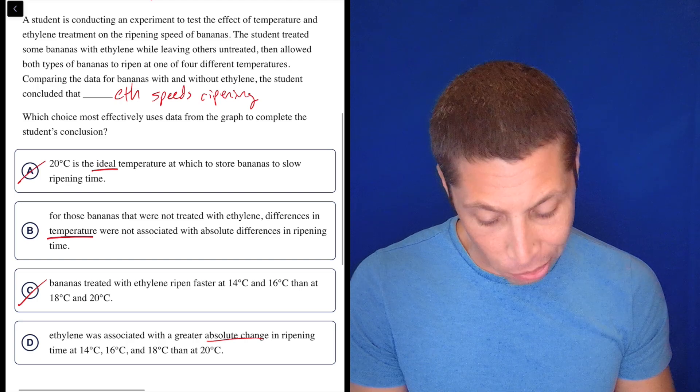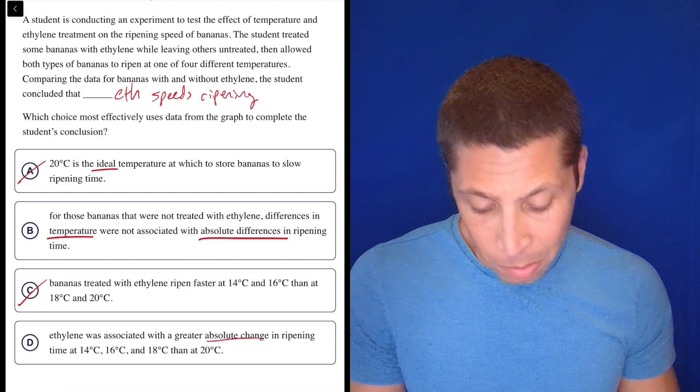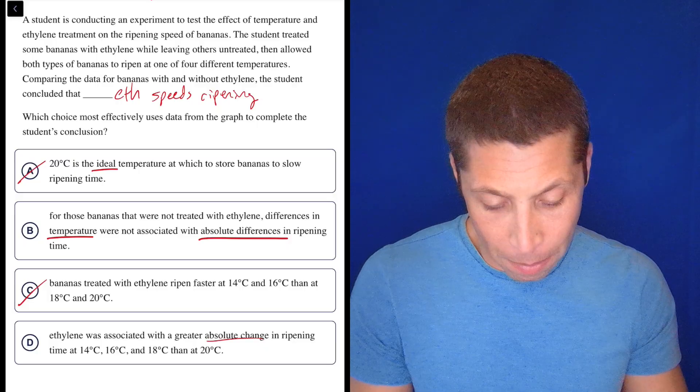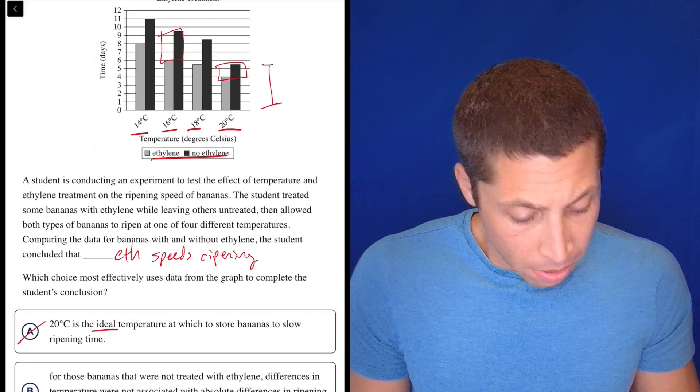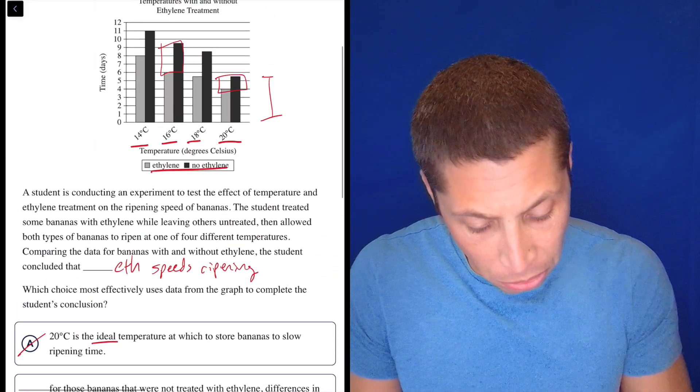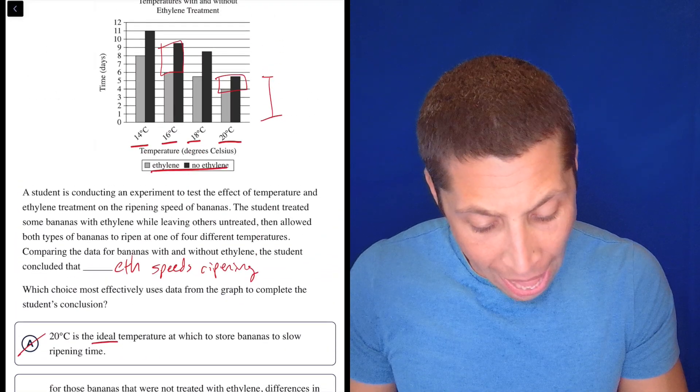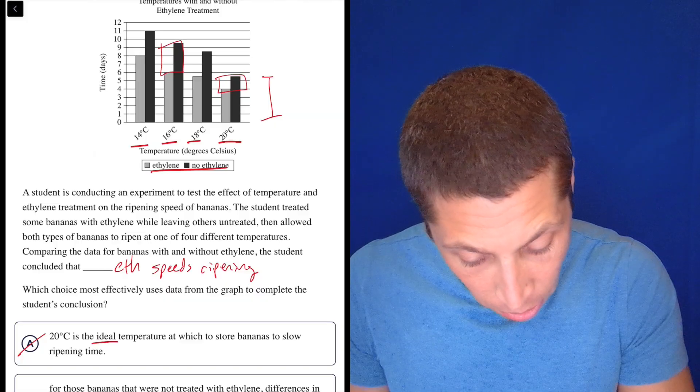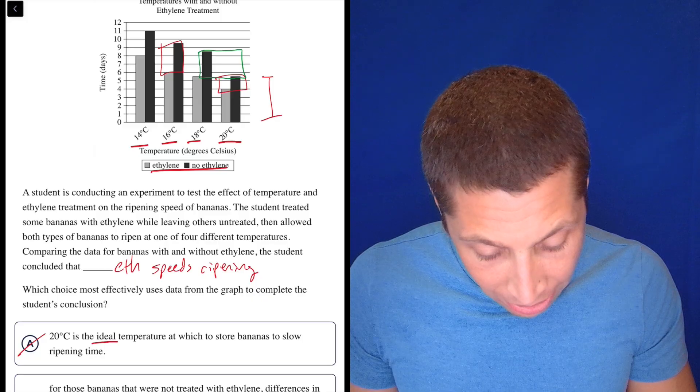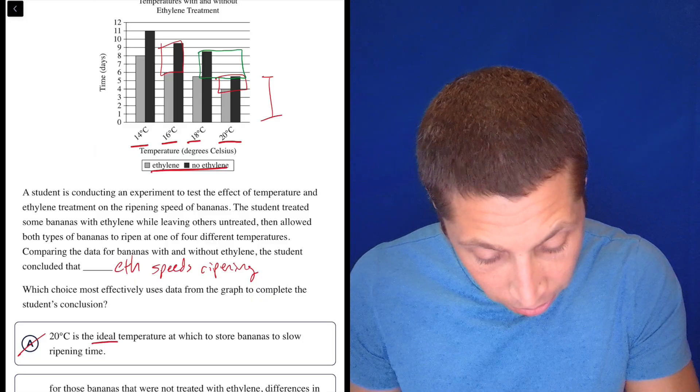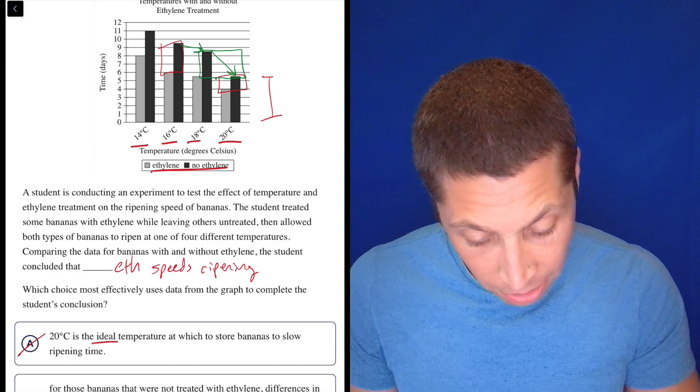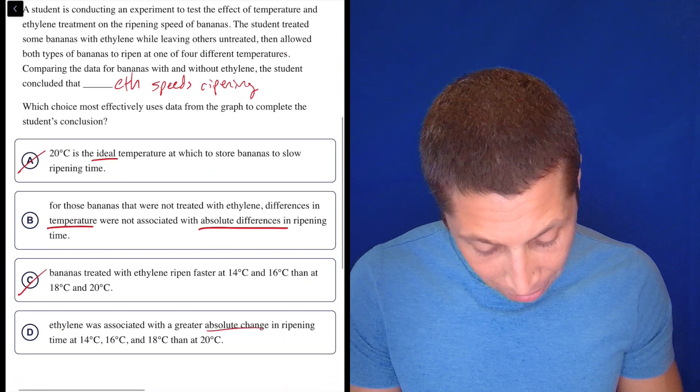Let's go back to B just because now I understand this absolute thing a little bit better. For those bananas that were not treated with ethylene, differences in temperature were not associated with absolute differences in ripening time. Again, they are, but here I'm even wondering if the absolute means something different. Like is absolute supposed to be the difference between the gray and the black, or is it supposed to be like the difference between like one black bar and the next black bar, right? And so that is changing, right? That black bar, the 18 to 20 is a greater absolute difference than 16 to 18.